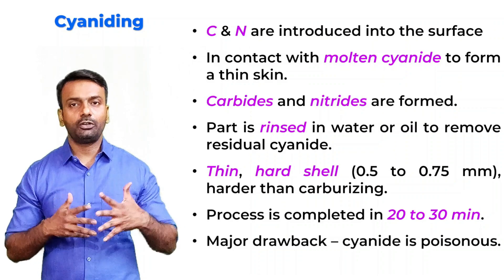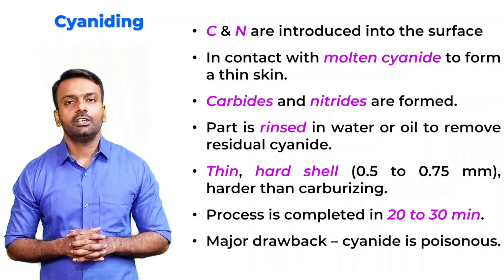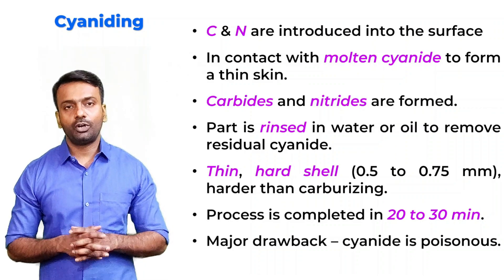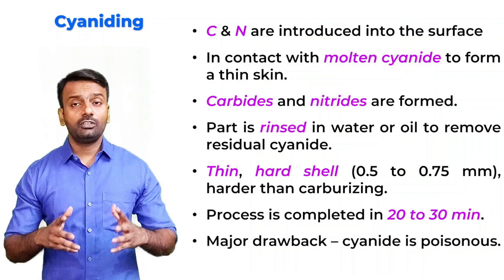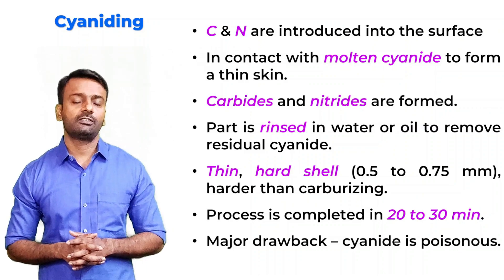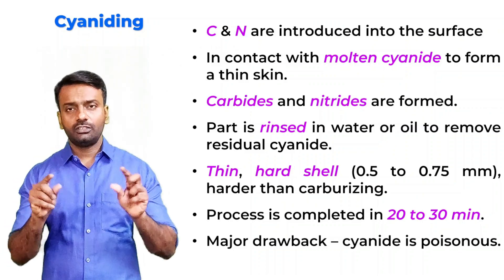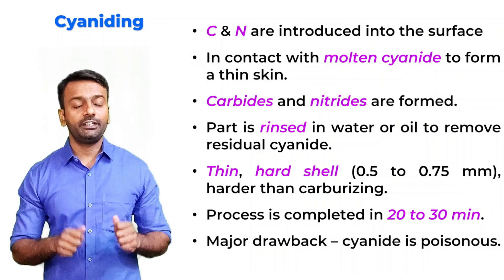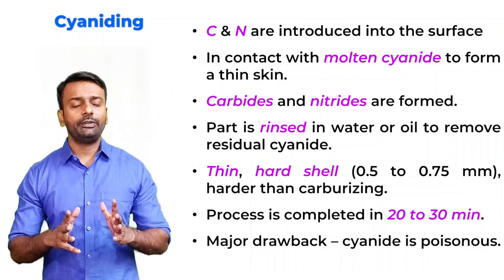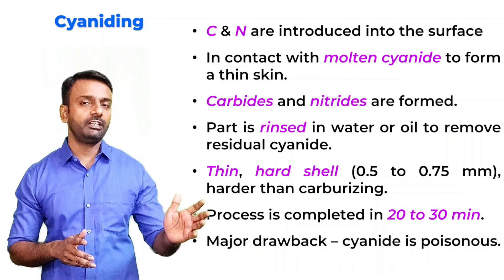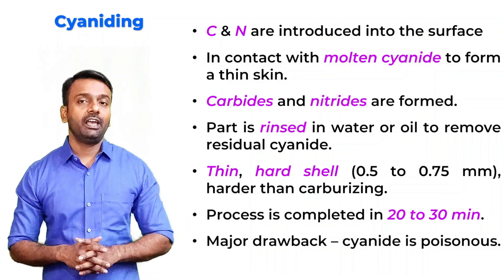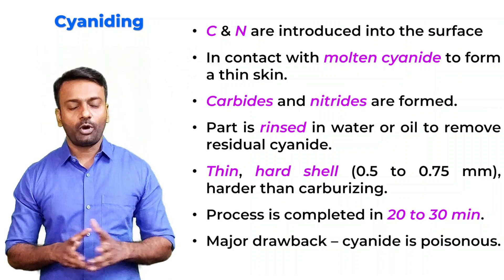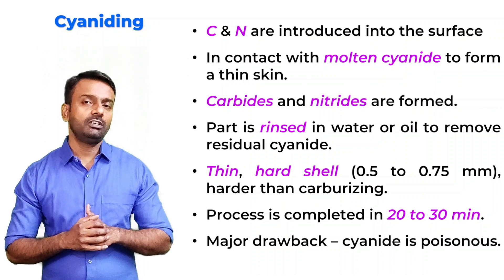The next surface treatment is cyaniding. In cyaniding, both carbon and nitrogen are introduced simultaneously onto the surface of the sample by contact with a molten cyanide bath. Carbides and nitrides are both formed. After cyaniding, the part must be rinsed thoroughly because cyanides are poisonous. Cyaniding produces a very thin but hard surface layer, approximately 0.5 to 0.75 millimeter thick — harder than that achieved by carburizing. The process is completed in just 20 to 30 minutes, making it very quick. Carburizing takes 8 hours, nitriding takes at least 40 hours, while cyaniding takes only 20 to 30 minutes.